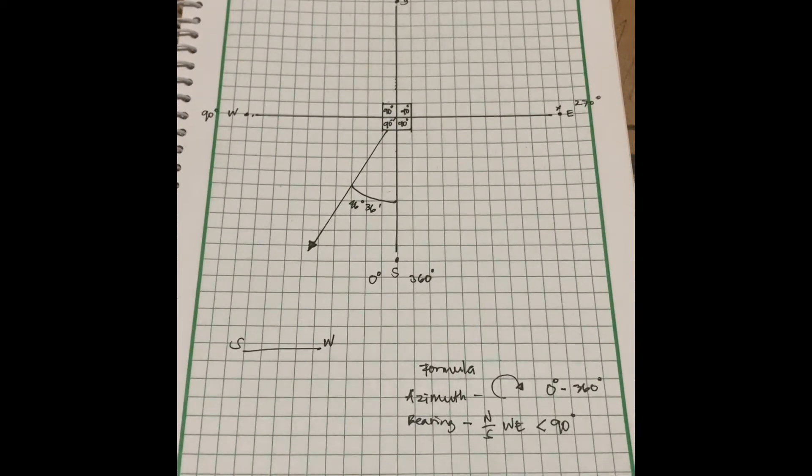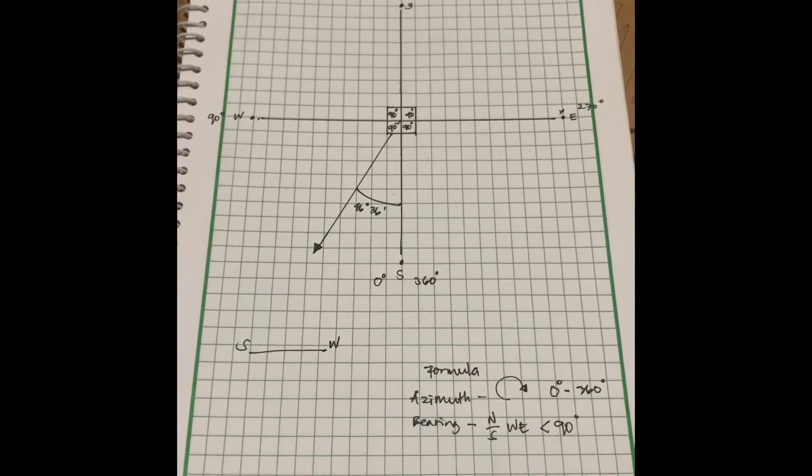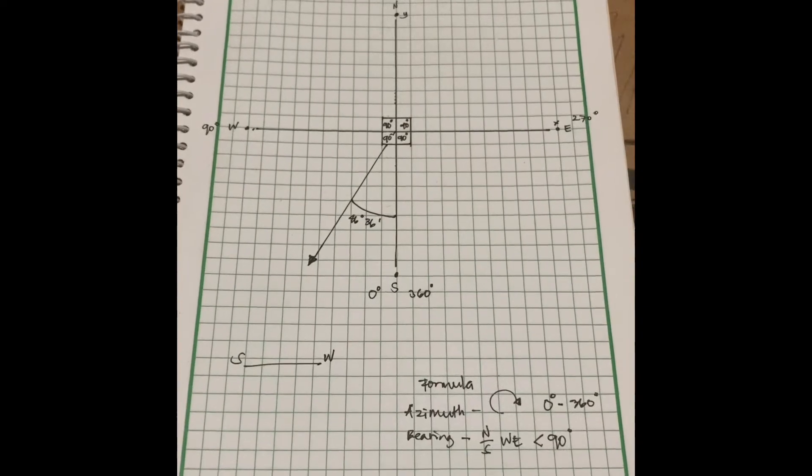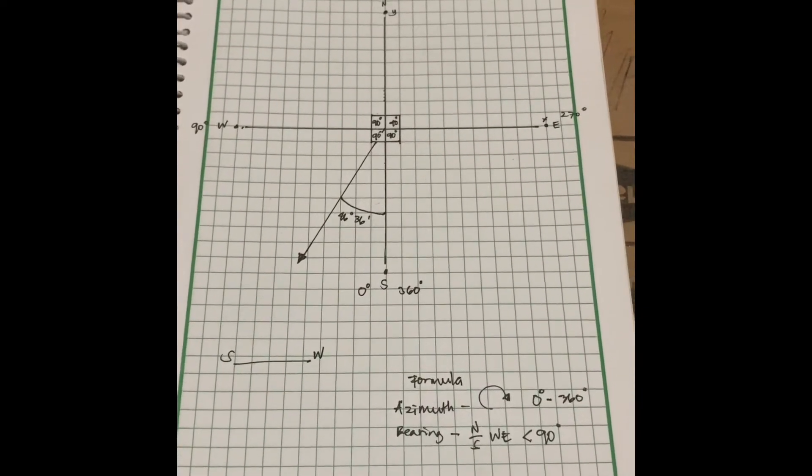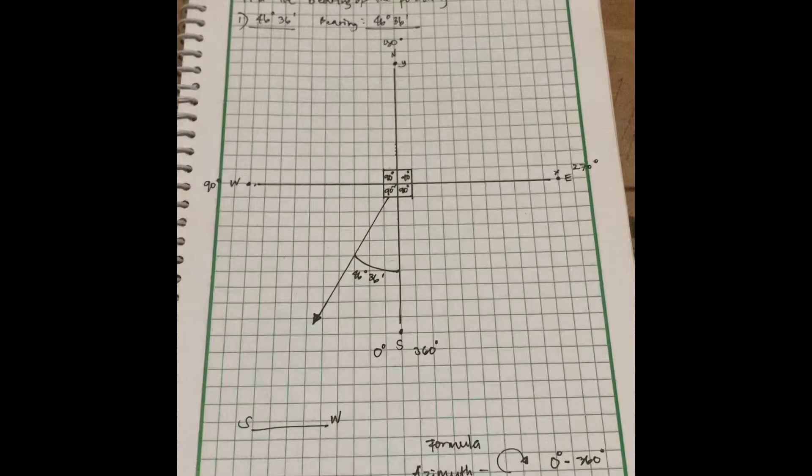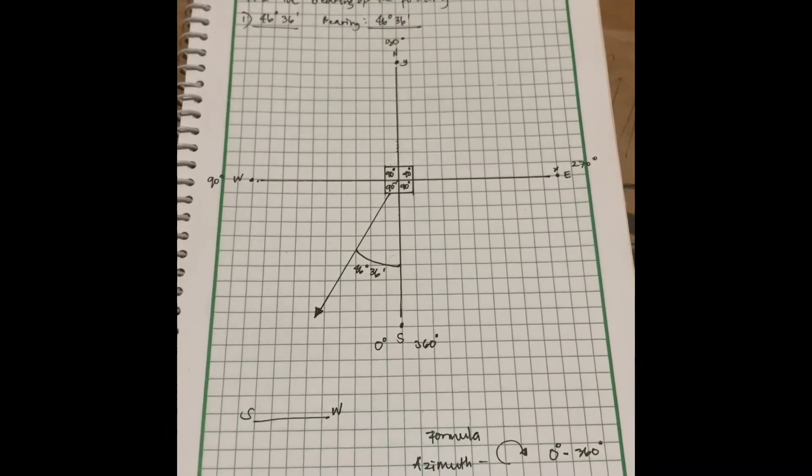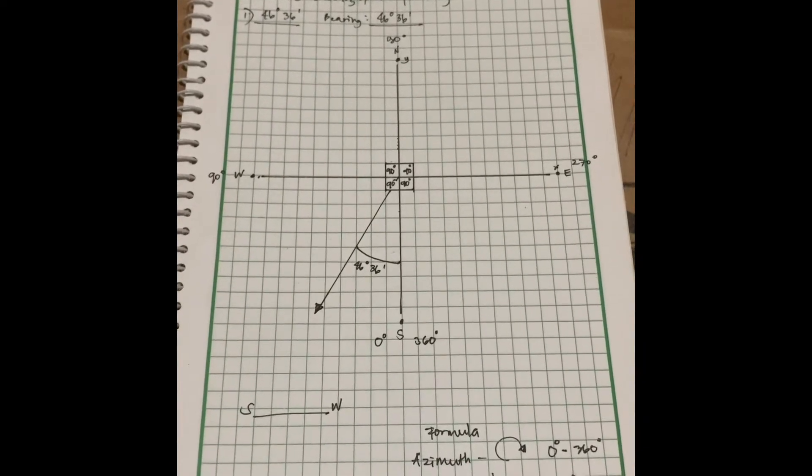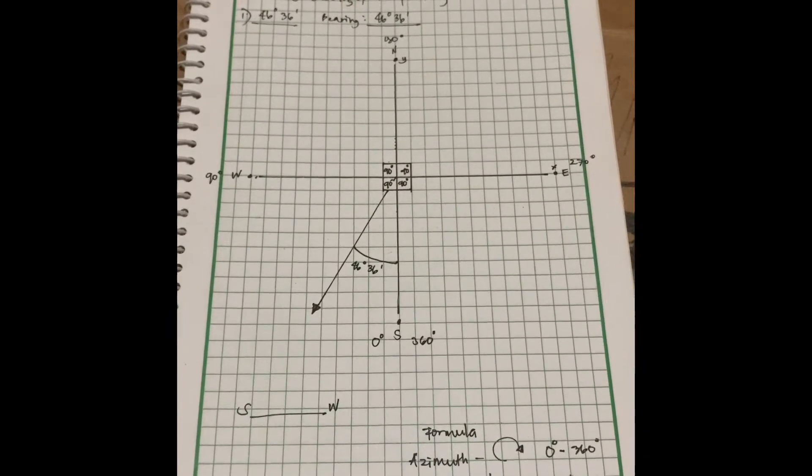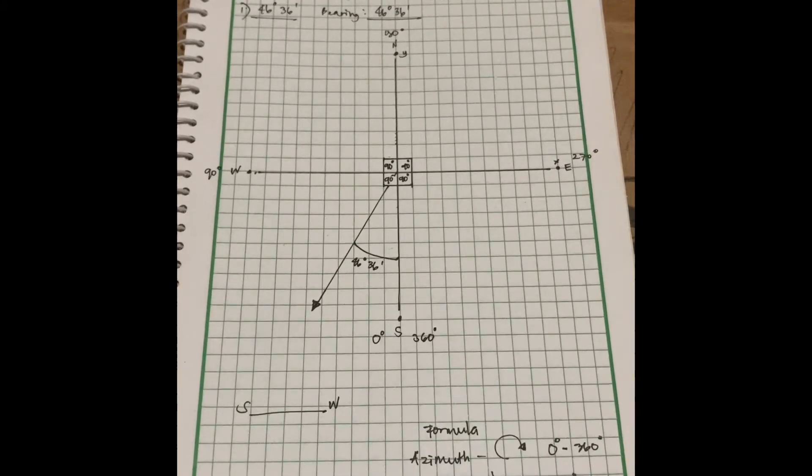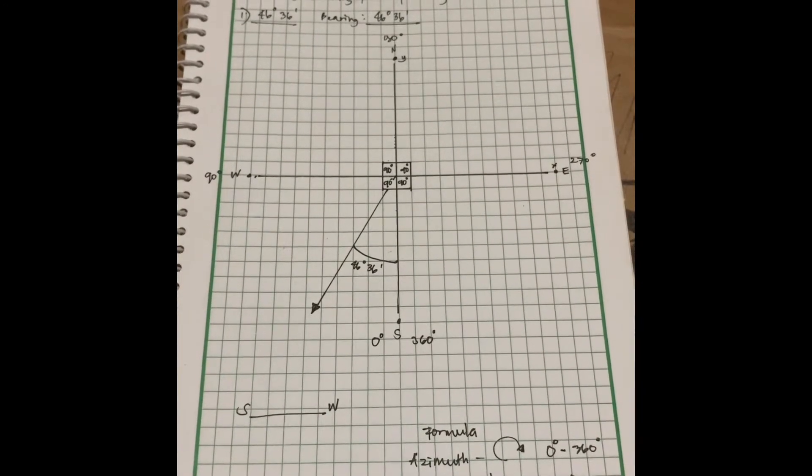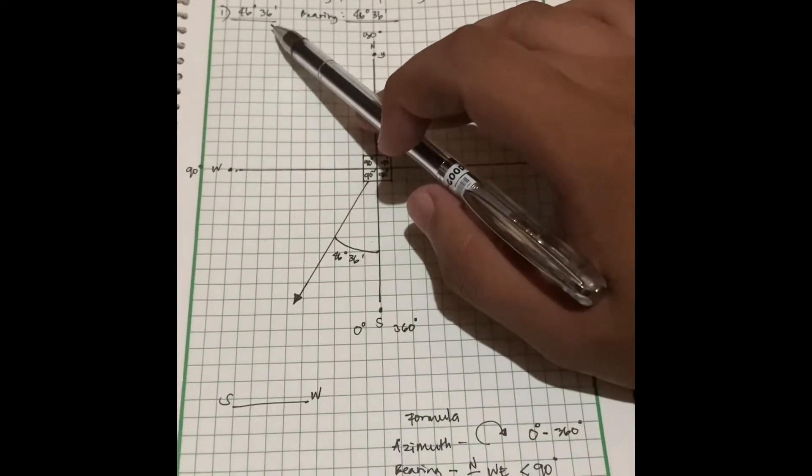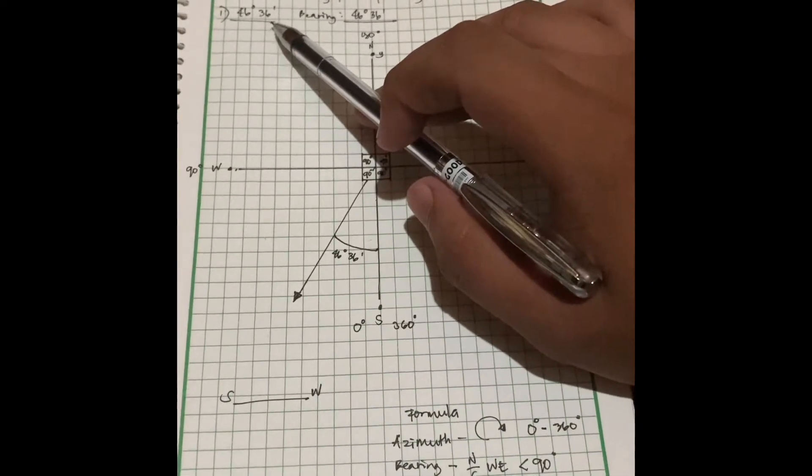Good day to each and everyone, I am Vladimir F Camayon. Today I'm going to explain and discuss the assignment given to us by our instructor Madam Josephine Mariah to find the bearing of the following azimuths. Number one, given azimuth is 46 degrees and 36 minutes.